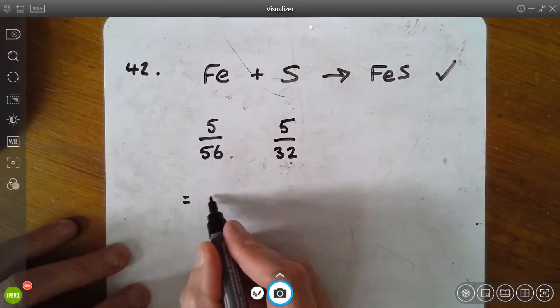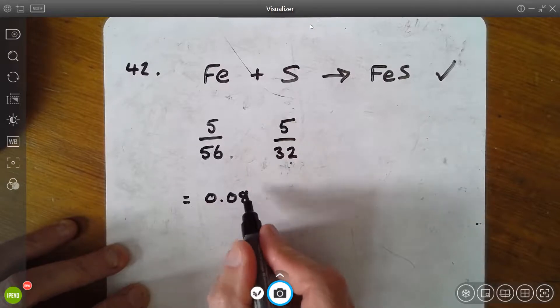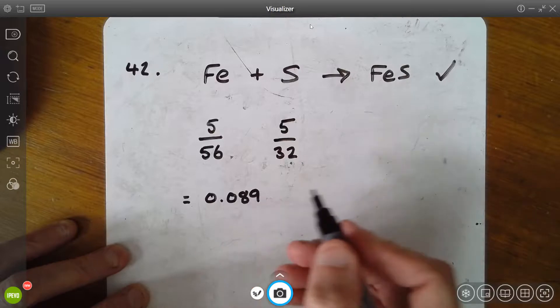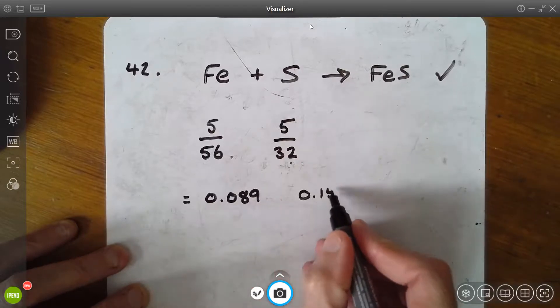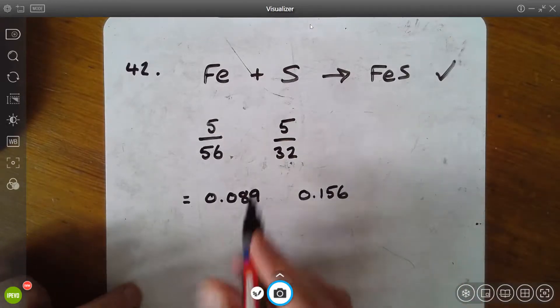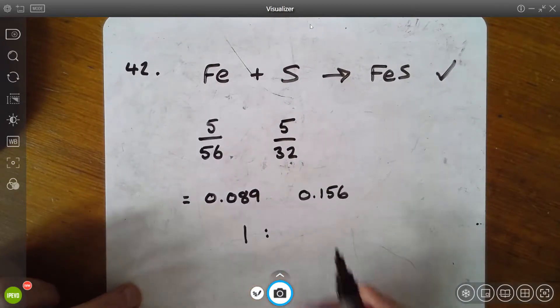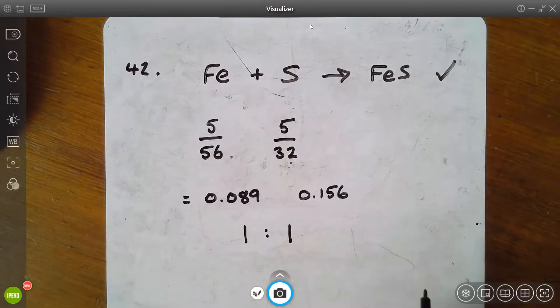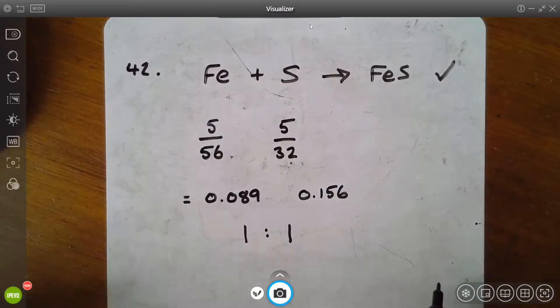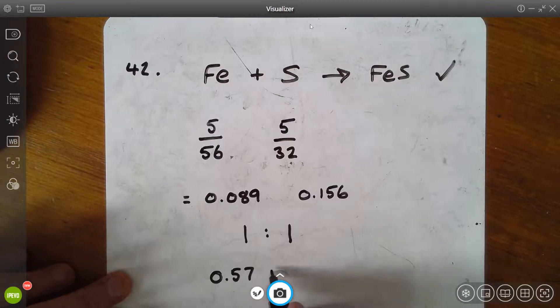Now we have the same mass of these things, 5 grams. We do that calculation and a bit of rounding up, it doesn't really matter at this stage, we're simply looking for excess or not: 0.089 and 0.156. I have rounded those numbers up a little bit. Now looking back at the equation we have a molar ratio of 1 to 1—1 mole of iron reacts with 1 mole of sulfur in our balanced equation.